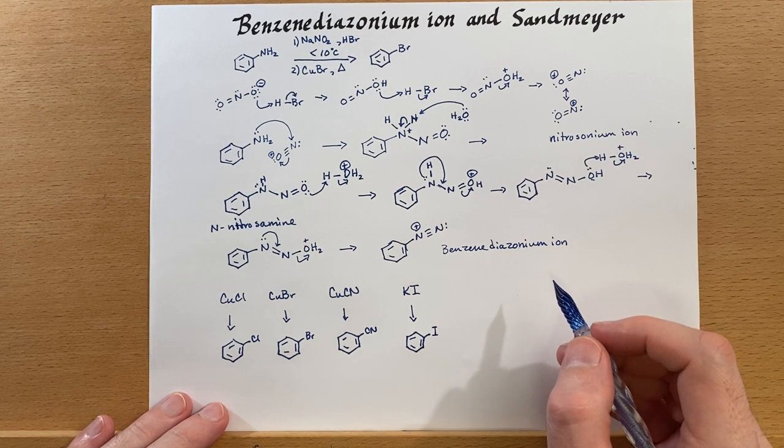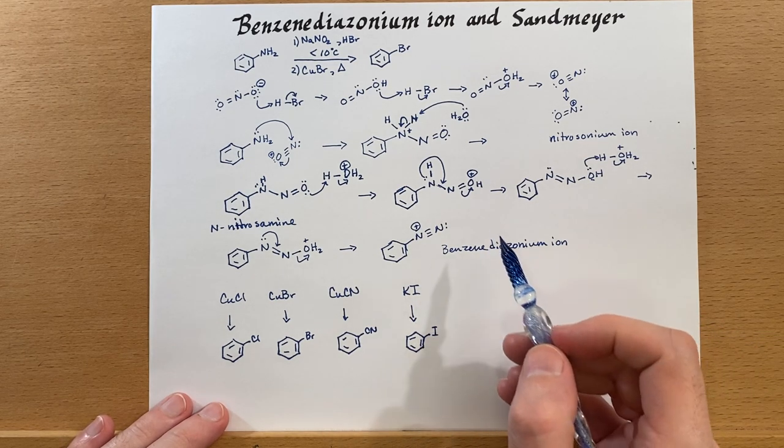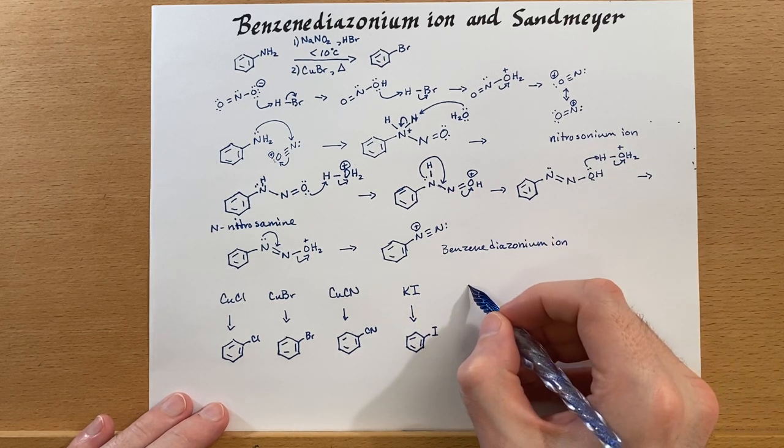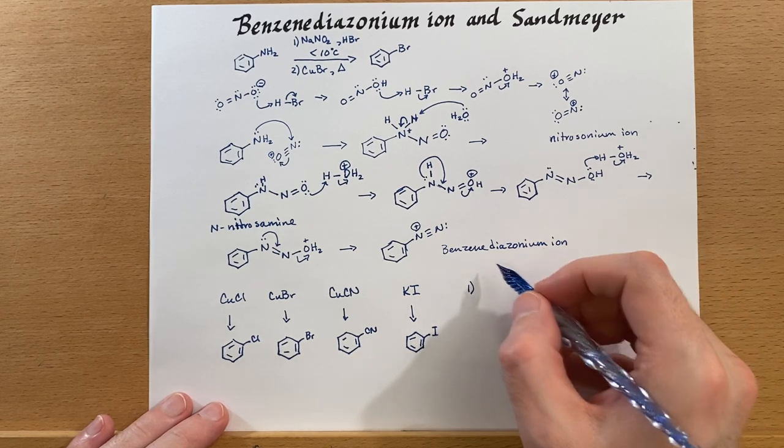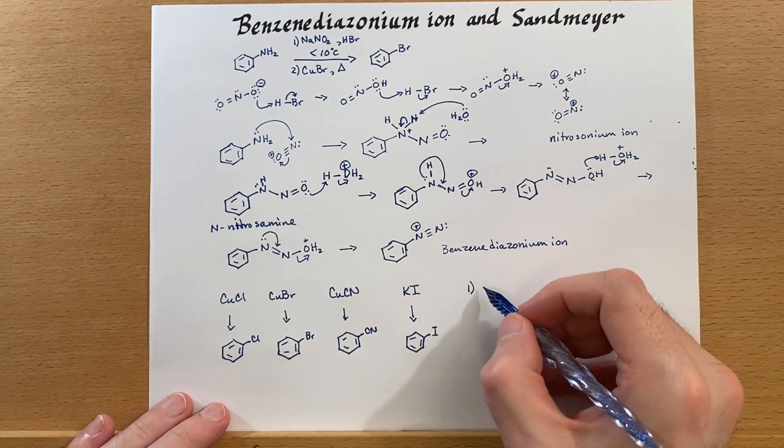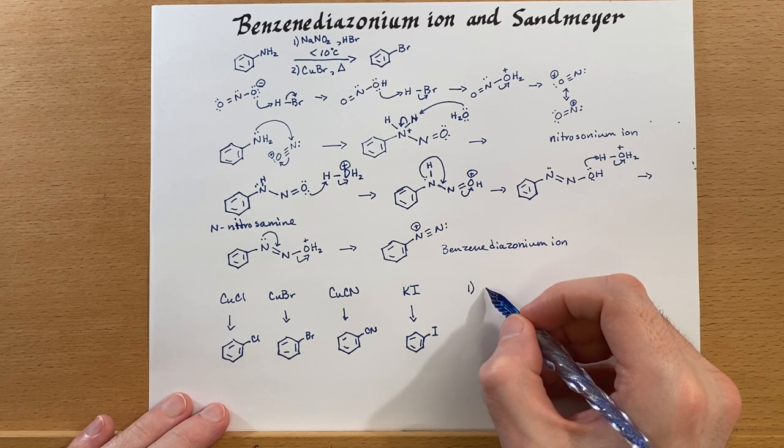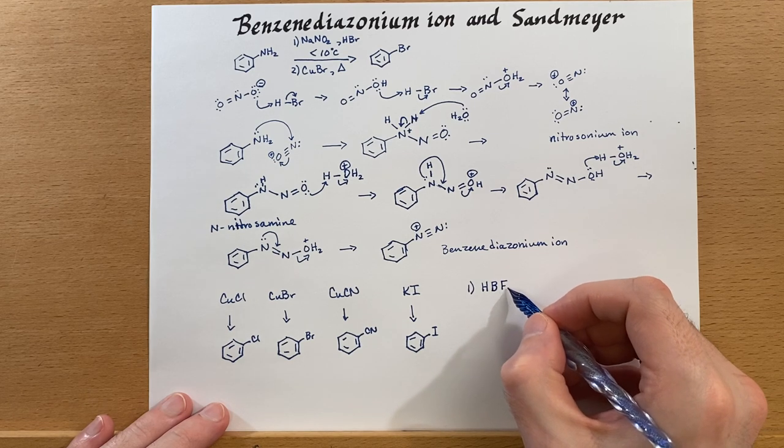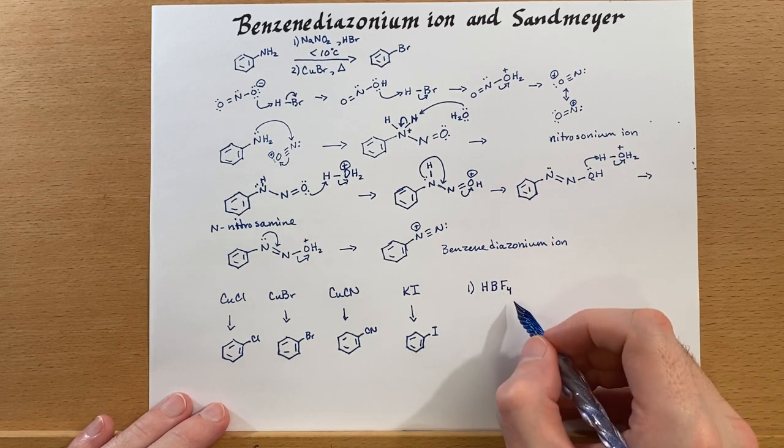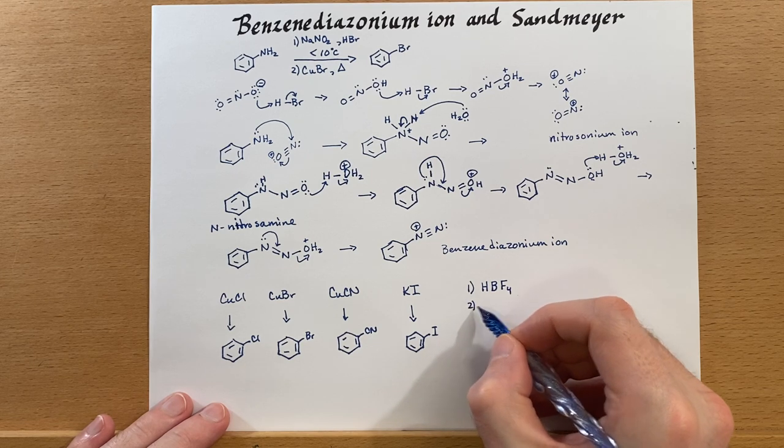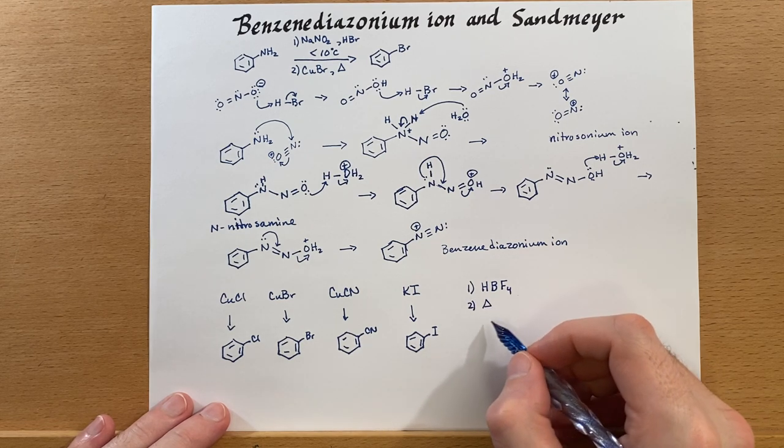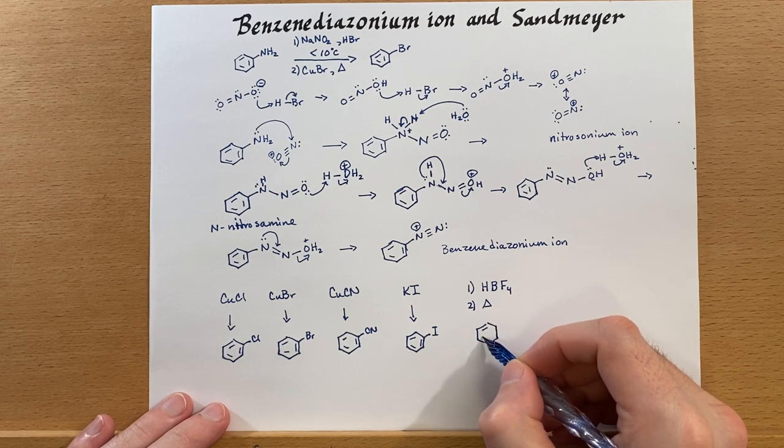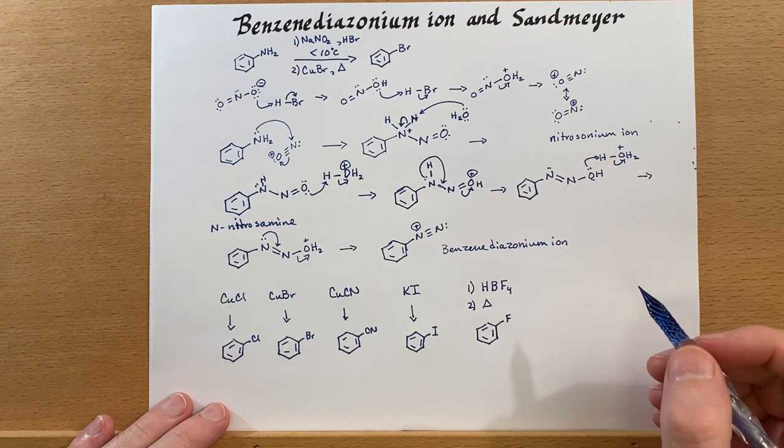We can fluorinate it. Remember how we talked about the difficulties in converting an aromatic ring or fluorinating an aromatic ring using molecular fluorine? Well, this is a way to do it. So we have this reagent right here. Step two, provide some heat. And then at that point, we can have a fluorinated aromatic ring like so.